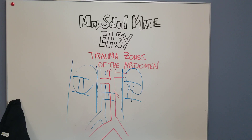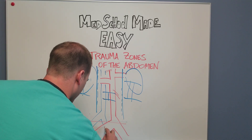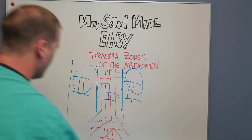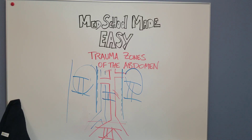Zone number three is going to be basically everything below the sacral promontory, down inside the pelvis — it encompasses all of the pelvis. Same thing here: if you have a penetrating injury there, you want to explore it, especially if it's an expanding hematoma. Usually for a blunt injury, if it's not a majorly or quickly expanding hematoma, you'll leave this alone.